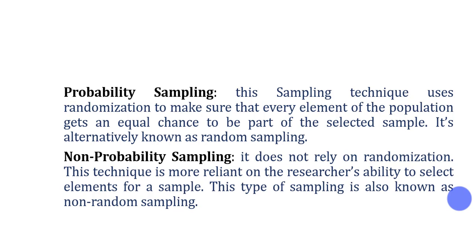Probability sampling and non-probability sampling. Probability sampling is based on randomization — each and every individual of the population has an equal chance to be part of the sample. It is also known as random sampling. On the other hand, non-probability sampling does not rely on randomization. Here, members of the population do not have equal chances to be part of the selected sample. This is also known as non-random sampling technique.